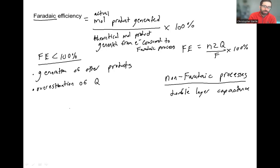And so if you're not calculating Q correctly, you could have double layer capacitance that's artificially inflating Q and then giving your FE less than 100%. Another thing that's very common is just degradation processes. Degradation processes. Your electrode's degrading. Your electrode itself is getting oxidized. Maybe that's your catalyst on your electrode or actually your surface.